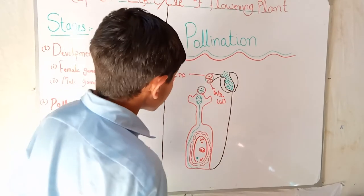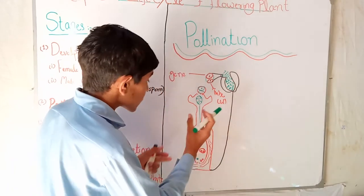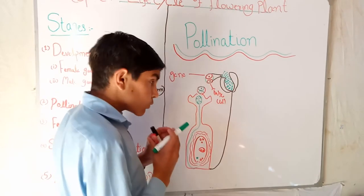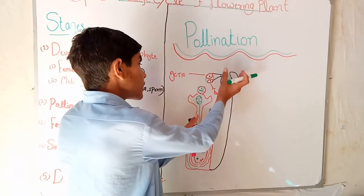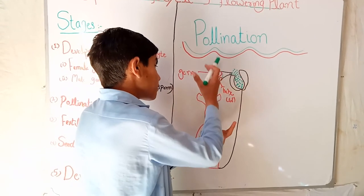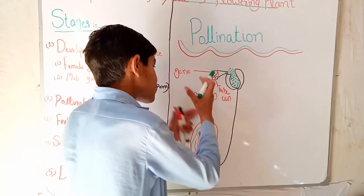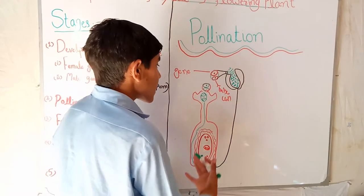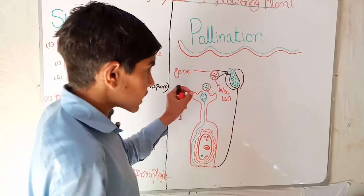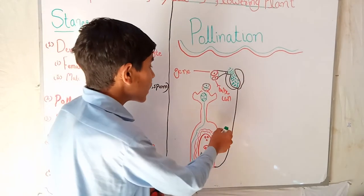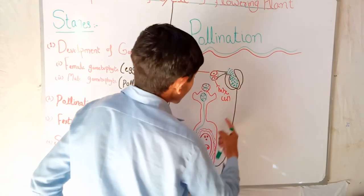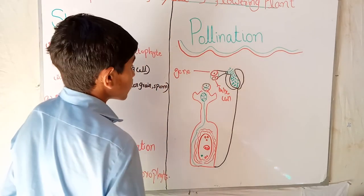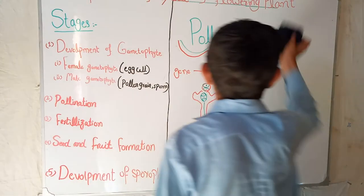There are two types of pollination. The first is self-pollination, in which only one flower is involved — the pollen from the anther of the same flower is transferred to the stigma of the same flower, and it may be in the same plant. The second is cross-pollination, in which the pollen grains are carried from one flower to the stigma of another flower of the same species.